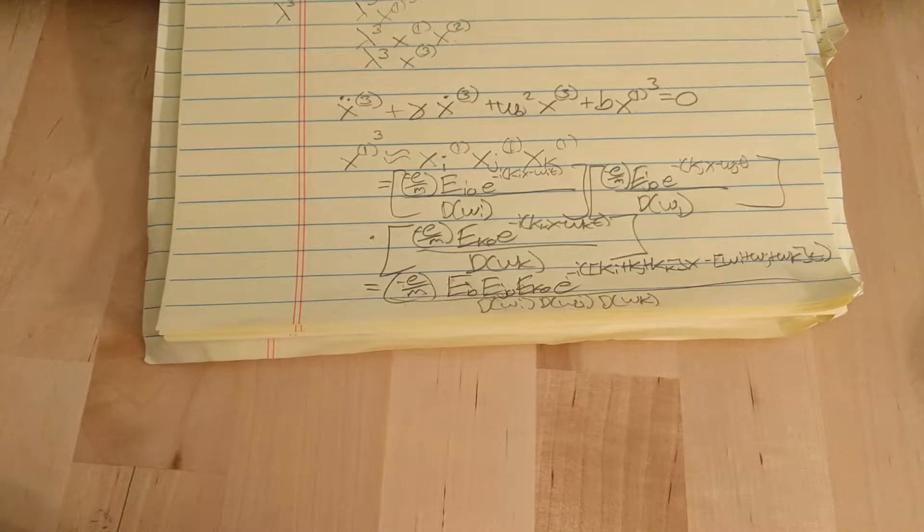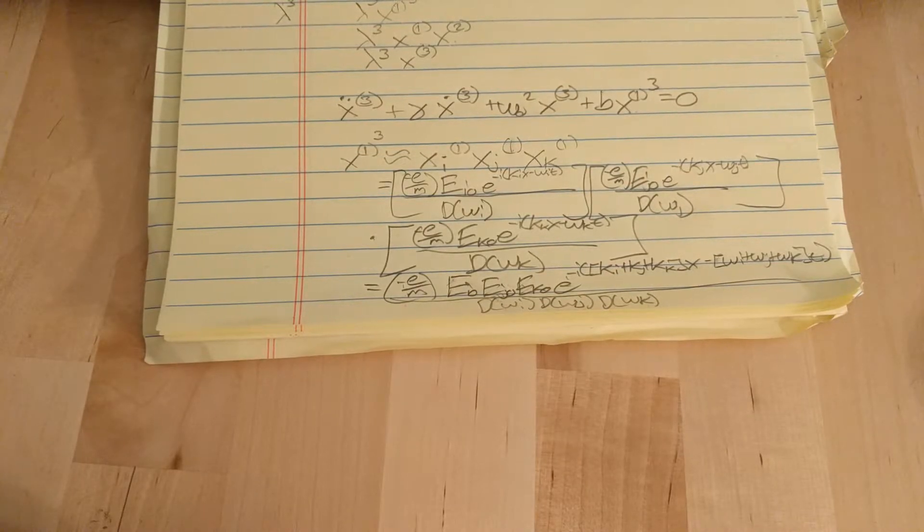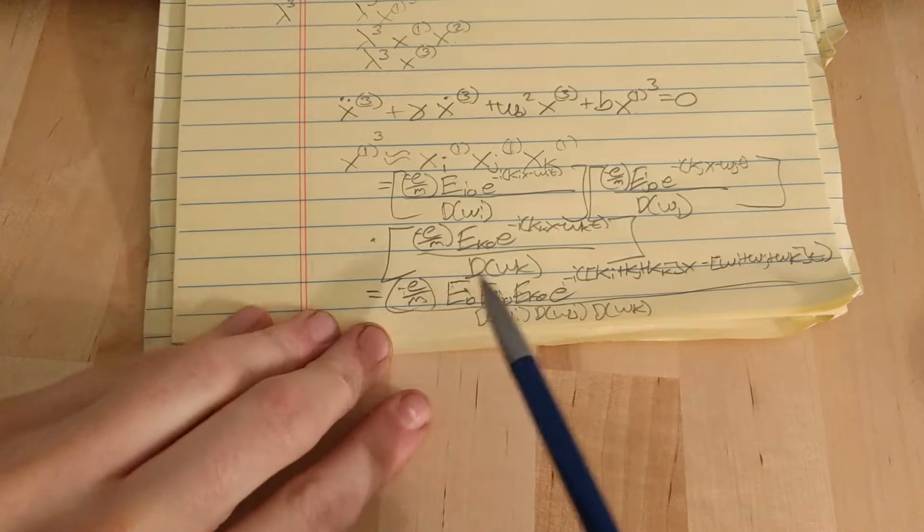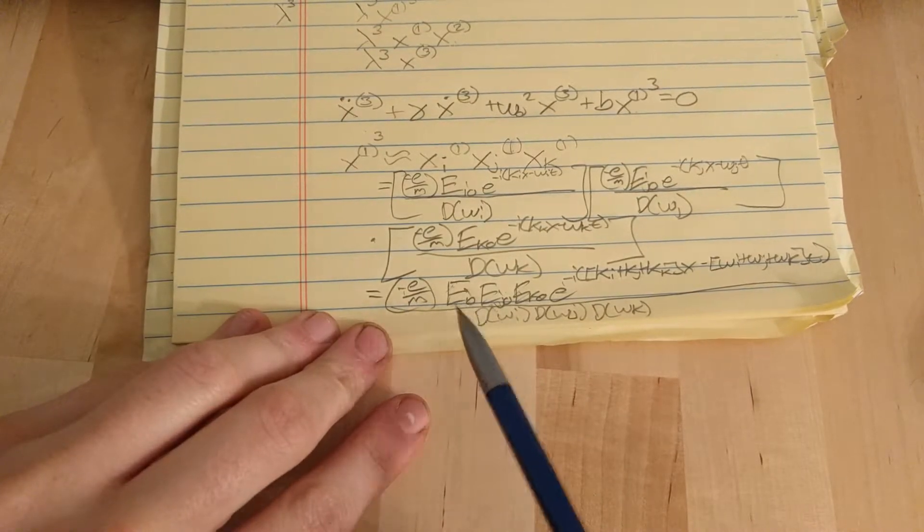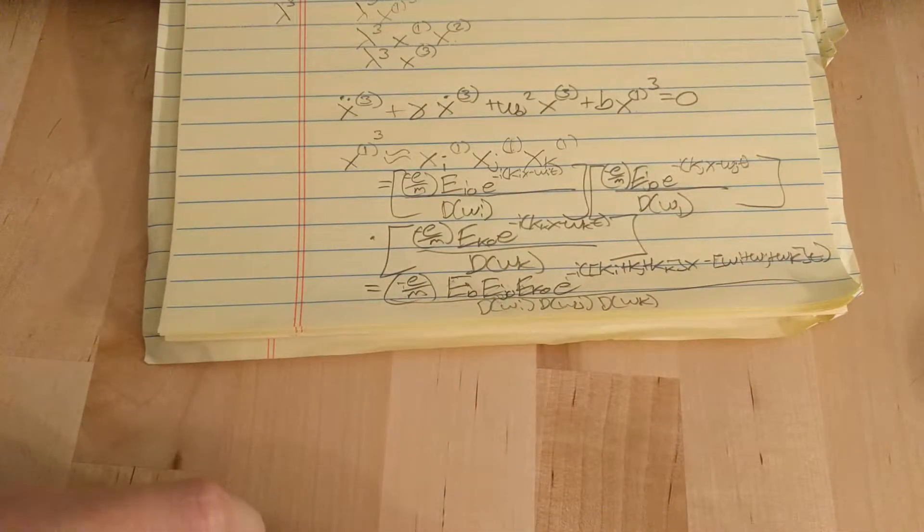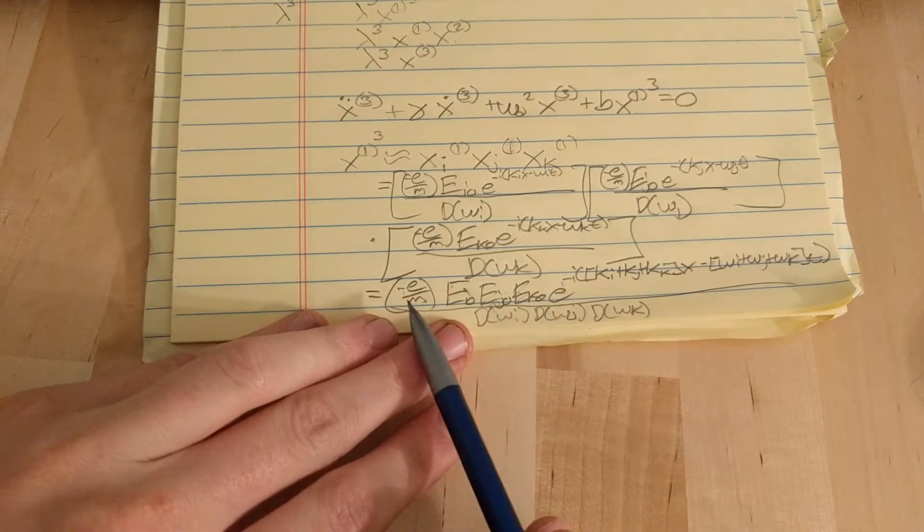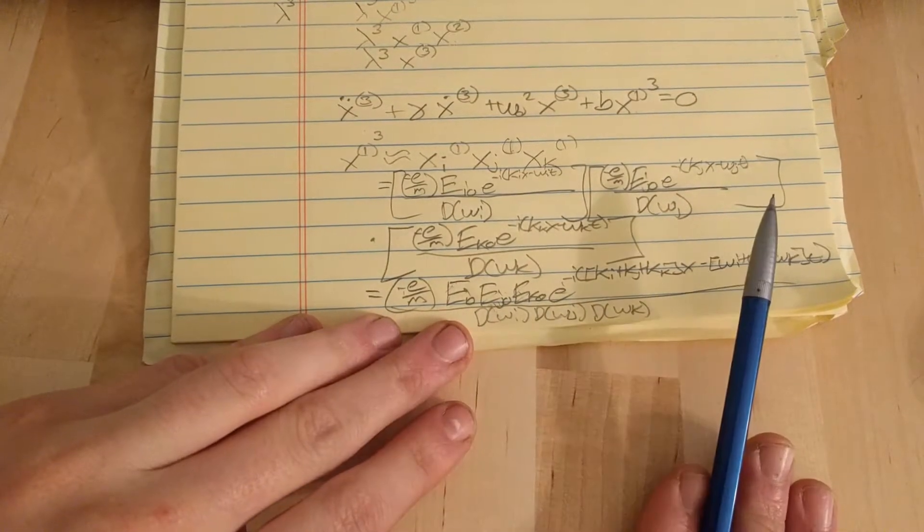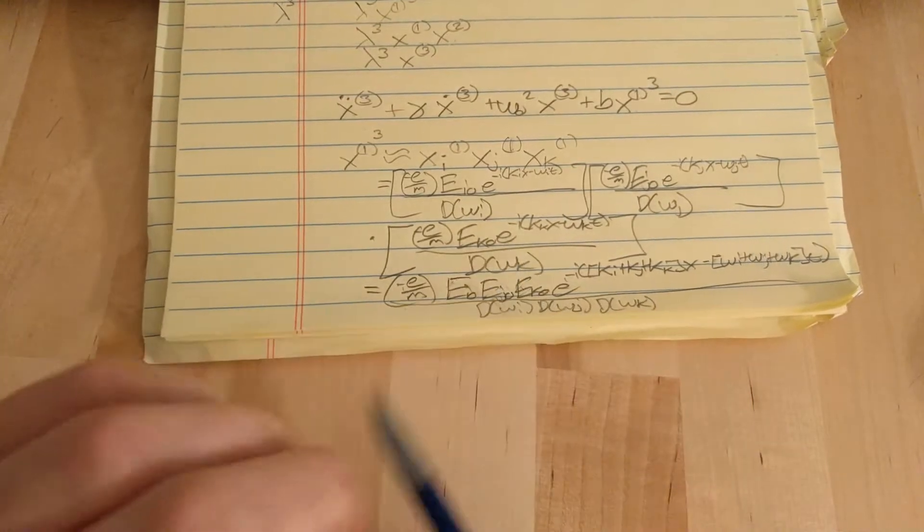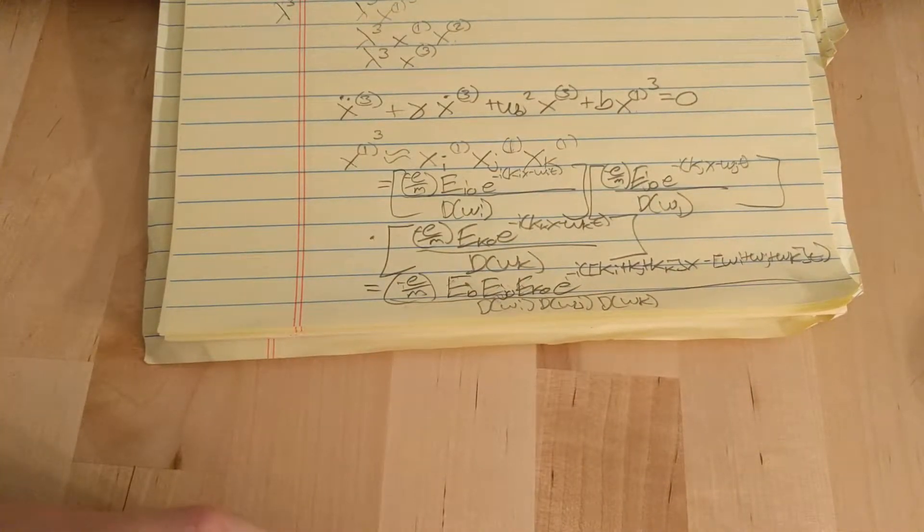But, I won't get into them here. We're just going to find one component. Okay, and note that for this whole video, I'm going to ignore the complex conjugate part.